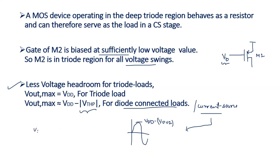Headroom is defined as V_DD minus V_out_max. If V_out_max is very close to V_DD, the headroom requirement is almost negligible. This is the main advantage of the triode load. This advantage is similar to a simple resistor load, but the triode load is preferred because we are using a MOS transistor instead of a simple resistor, which is easier to implement on-chip.